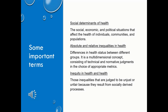It's worth going through some definitions early on. The social determinants of health are the social, economic and political situations that affect our health, the health of our communities, friends, families and populations as a whole. Absolute and relative inequalities in health are the differences between different groups, and it's a multidimensional concept which also includes judgments that we make and the way that we measure health. Inequities are inequalities, and they tend to be related to the way that society functions.